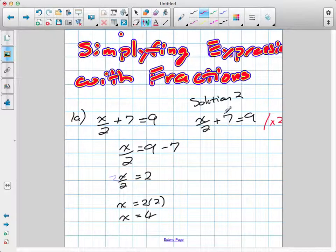That means I have to multiply every single term in this equation on the left side and on the right side by 2. So I'm multiplying 9 by 2, 7 by 2, and x by 2. When we do that,